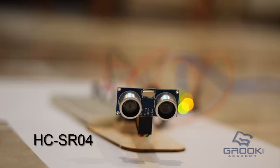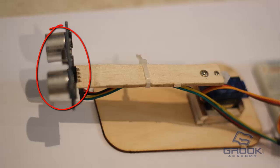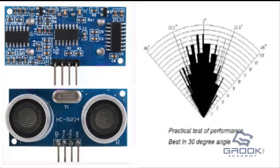Second component is the ranging module HCSR04, which provides 2 to 400 cm non-contact measurement function. The ranging accuracy can reach to 3 mm.